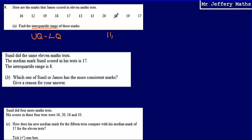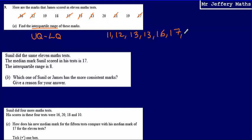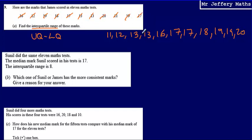So we've got 11 first, and that's our smallest number. Then we've got a 12, then two 13s, then a 16, then two 17s, then an 18, and then two 19s and a 20. So we've got all of our numbers lined up in size order.